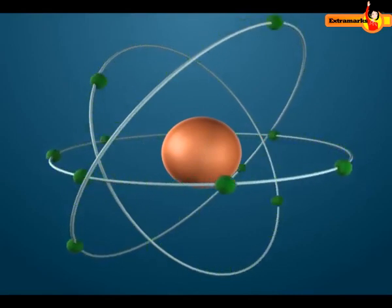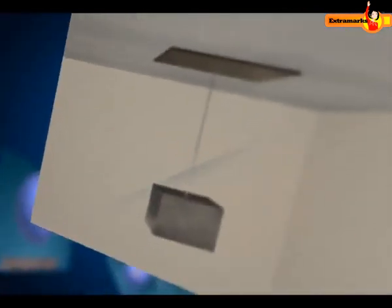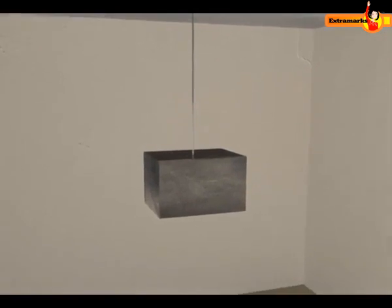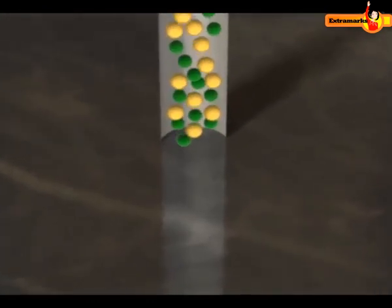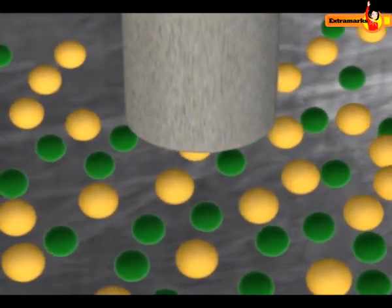Let us understand more clearly by taking an example from daily life. Consider a heavy block hanging from the ceiling by a string. We can see that the string is composed of electrons and protons. Similarly, the block is also composed of protons and electrons.